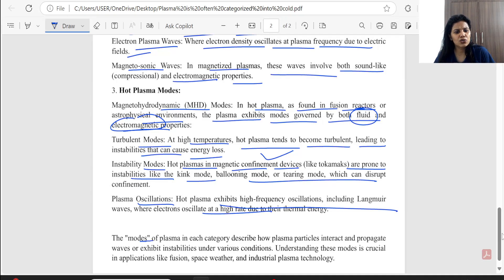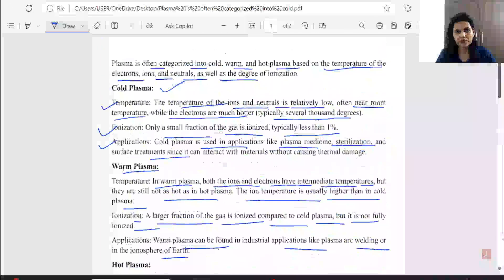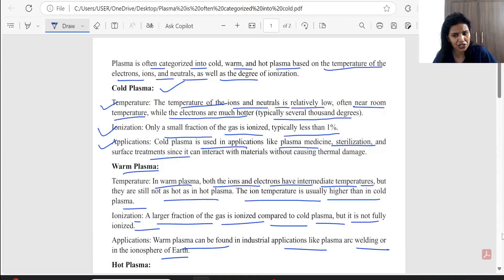We have taught plasma oscillation. High frequency plasma oscillation. So, the modes of plasma in each category describe how plasma particles interact and propagate waves or exhibit instabilities under various conditions. Understanding these modes is crucial in application like fusion, space, weather and industrial plasma technology. So, basically, this is your mode. This is a theoretical part. It is a theory, basically, its definitions and its modes.